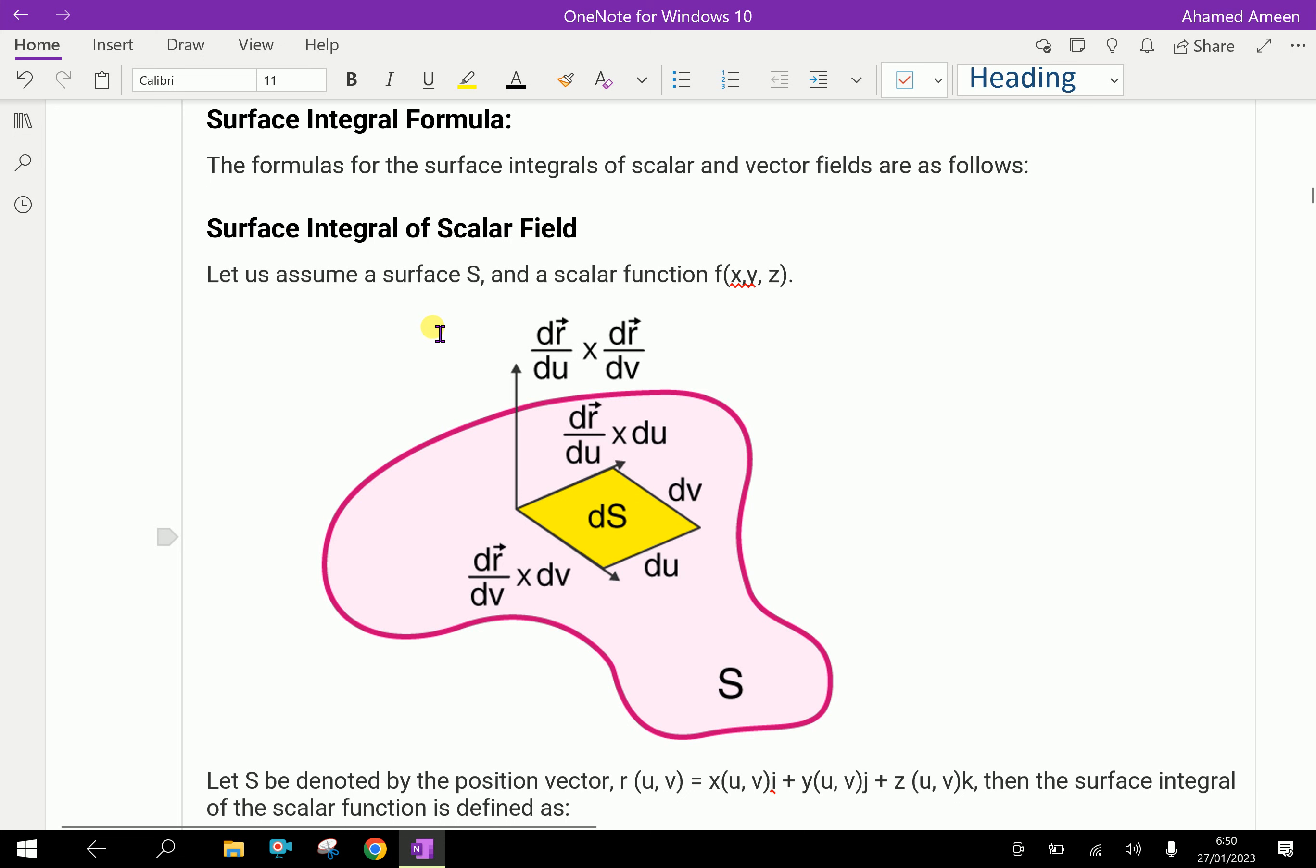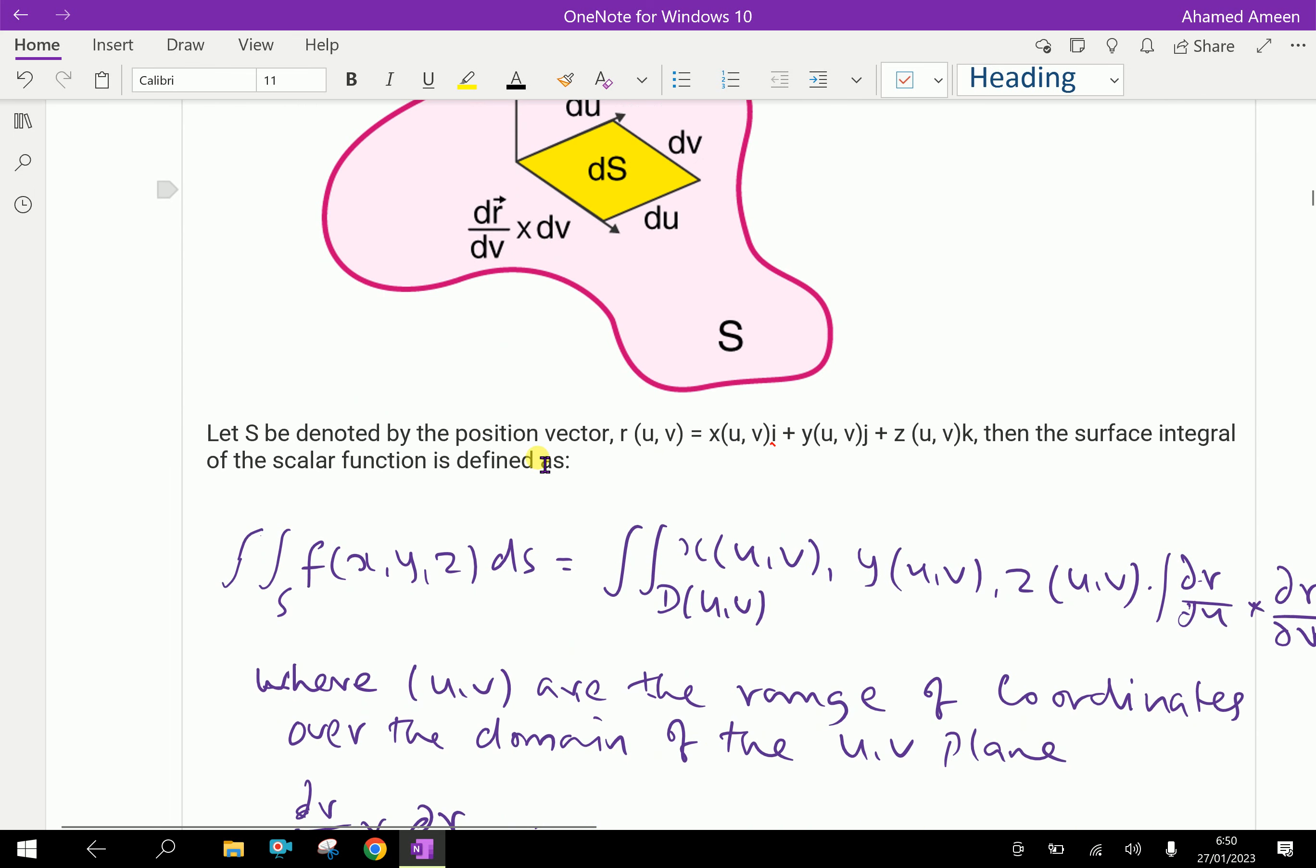Let us assume the surface S and a scalar function f(x, y, z). Let S be denoted by the position vector r(u, v) which equals x(u, v)i plus y(u, v)j plus z(u, v)k.